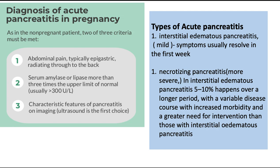To diagnose acute pancreatitis in pregnancy, as in non-pregnant patients, two of three criteria must be met: number one, abdominal pain typically epigastric radiating through to the back; number two, serum amylase or lipase more than three times the upper limit of normal, usually more than 300 units per litre; and number three, characteristic features of pancreatitis on imaging. Ultrasound is the first modality of choice.